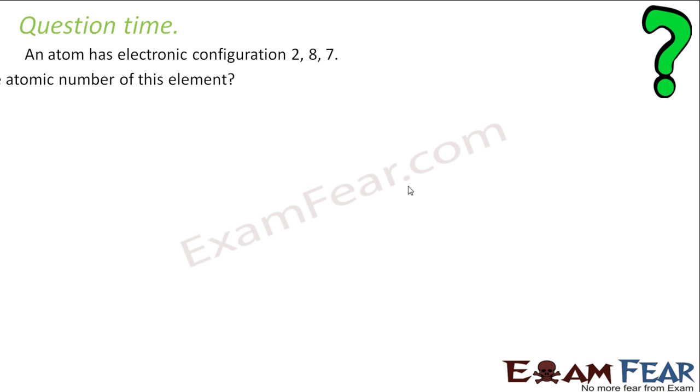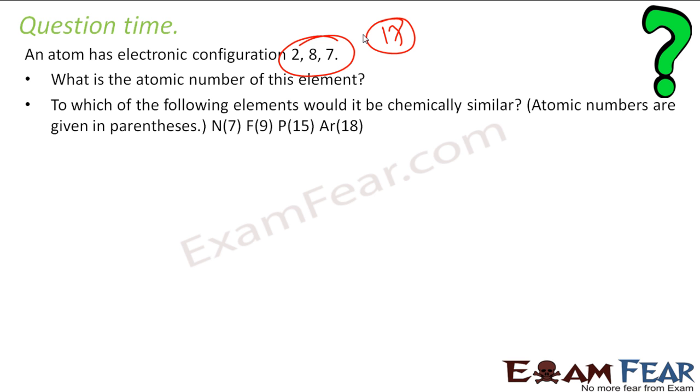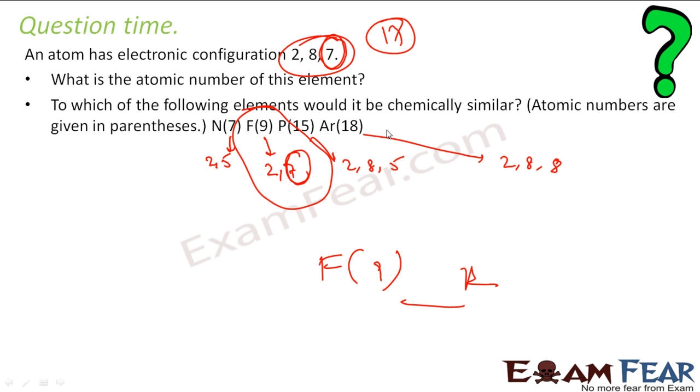An atom has the electronic configuration of 2, 8, 7. What is the atomic number? So you add all these values, you get 17. So 17 is my atomic number. To which of the following elements would it be chemically similar? The first is N7, so this becomes 2, 5. For this, electronic configuration will be 2, 7. This 15 becomes 2, 8, 5. This will become 2, 8, 8. Now I have seven in the valence electron, so I am looking for seven in the valence electron. That is, I am looking for F. So F9 is the answer. F9 will be chemically similar because both have similar number of atoms in the valence shell.